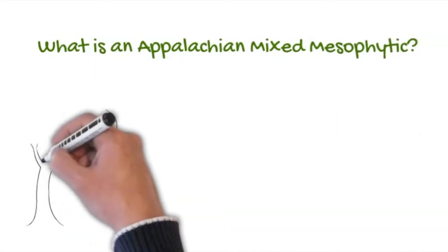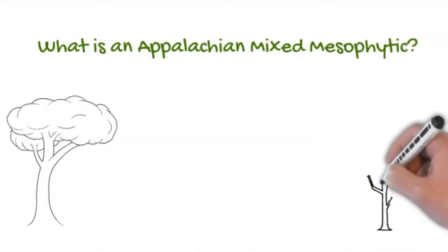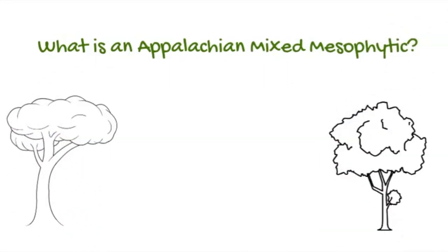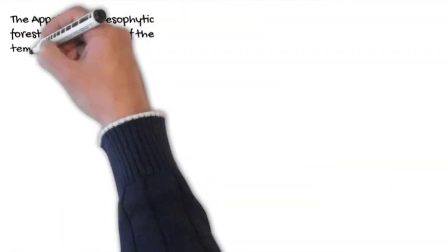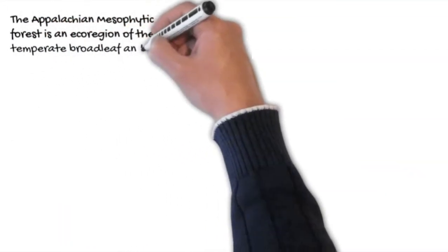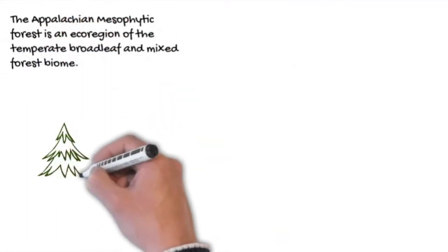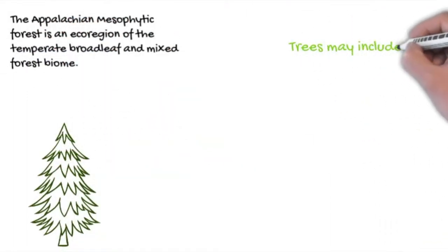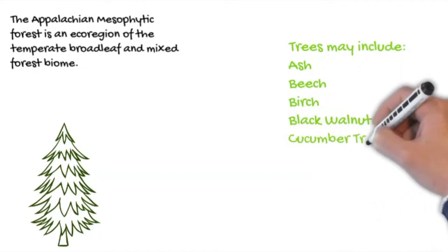Hello, today we are going to talk about what is a mesophilic forest. According to the World Wildlife Fund, the Appalachian Mesophilic Forest is an eco-region of a temperate broadleaf and mixed forest biome.